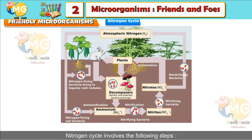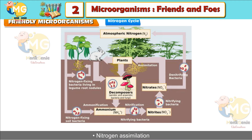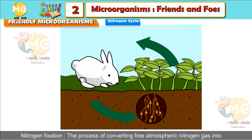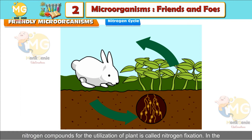The nitrogen cycle involves the following steps: nitrogen fixation, nitrogen assimilation, ammonification, nitrification, and denitrification. The process of converting free atmospheric nitrogen gas into nitrogen compounds for the utilization of plants is called nitrogen fixation. In nature, it takes place in the following ways.